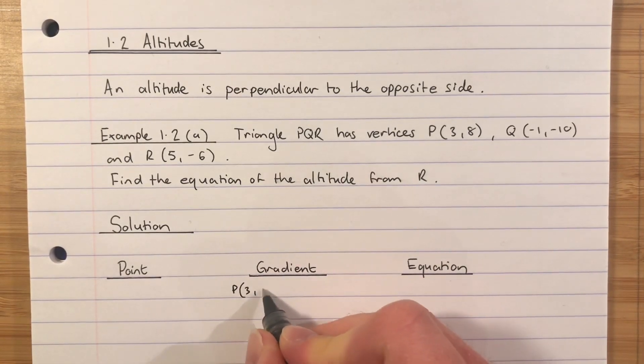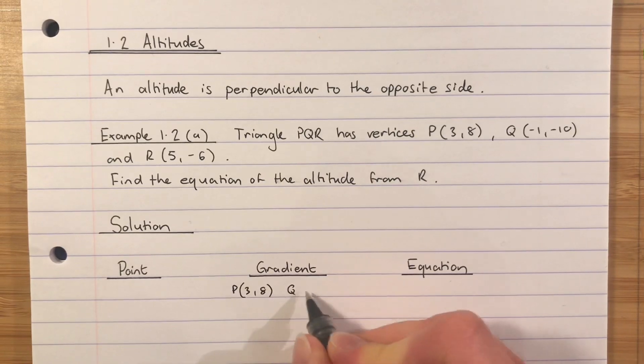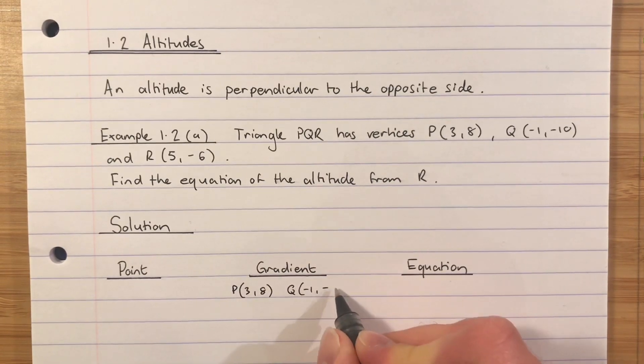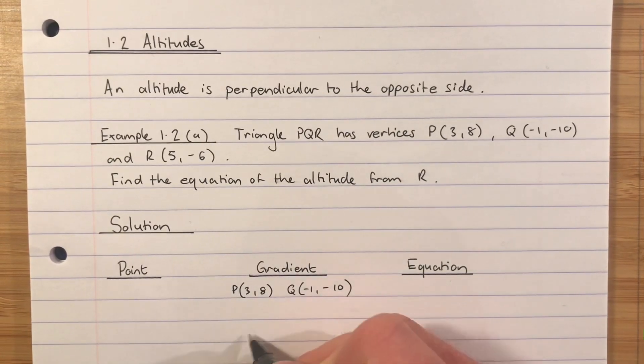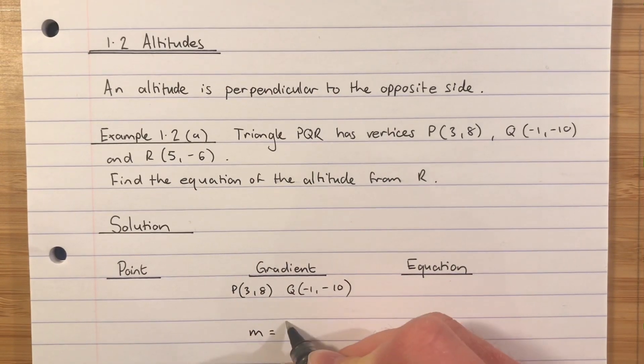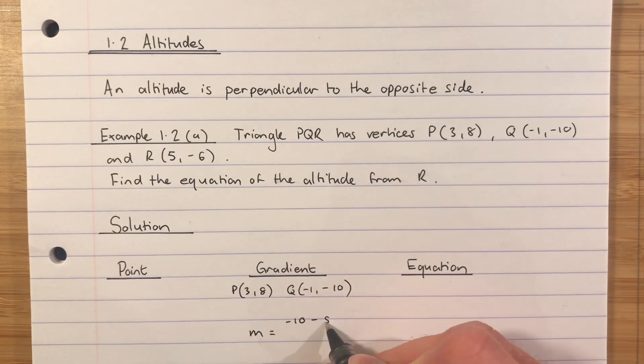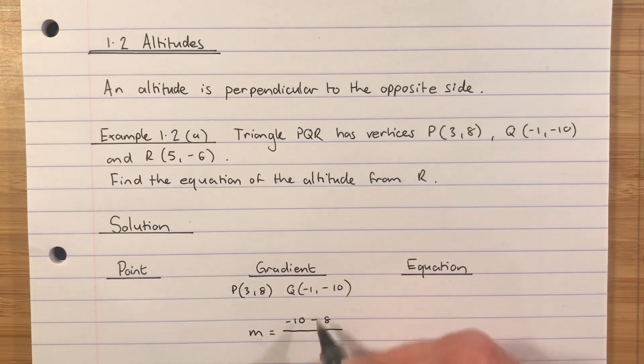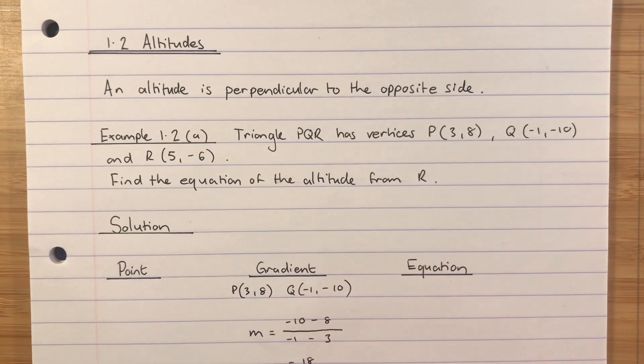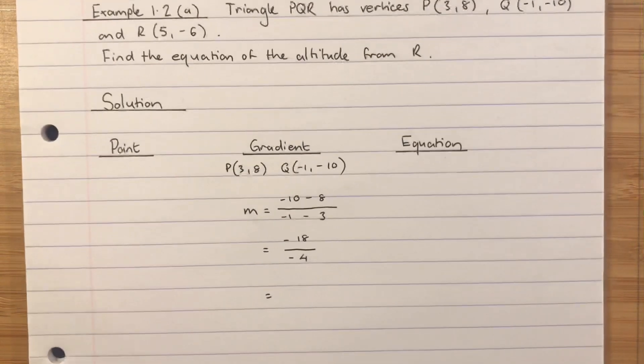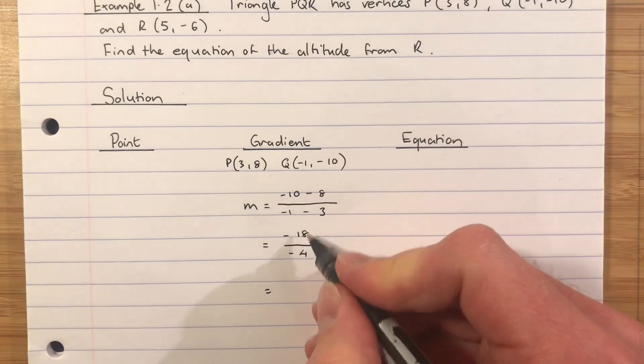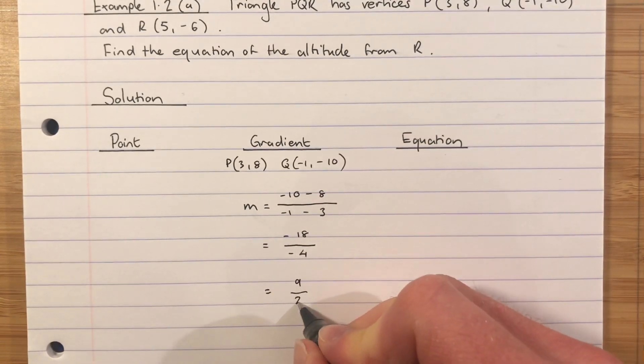P is the point (3,8), Q is the point (-1,-10). We'll find the gradient of PQ. So on the top I've got -10 take away 8. On the bottom I'll have -1 take away 3. That gives me -18 divided by -4. These two negatives will cancel so my answer is going to be positive at the end, and they're going to simplify to give me 9 over 2.